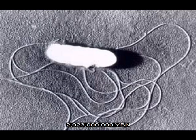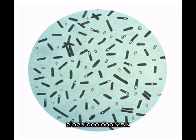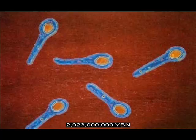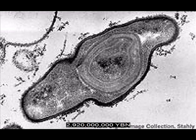Eubacteria firmicutes evolve — gram-positive bacteria, cause of botulism, tetanus, and anthrax. First endospores: the ability to form endospores evolves in firmicutes. An endospore is a tough, reduced, dry form of a bacterium that can be revived after long periods of time.